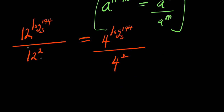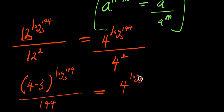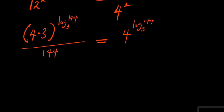We can express 12 as the product of 4 times 3, so this becomes (4 times 3) raised to the power of log 144 to the base of 3, divided by 12 squared which is 144. This equals 4 to the power of log 144 to the base of 3, divided by 4 squared which is 16.